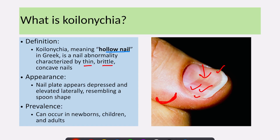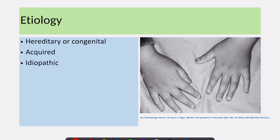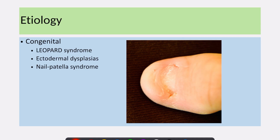This can occur in newborns, children, as well as in adults. There are many causes of koilonychia, and they can be broadly classified into hereditary or congenital causes, acquired causes, and idiopathic causes. This picture shows koilonychia in a patient with a family history of koilonychia, suggestive of familial koilonychia. There are many congenital disorders which can lead to koilonychia, including leopard syndrome, ectodermal dysplasia, and nail patella syndrome.